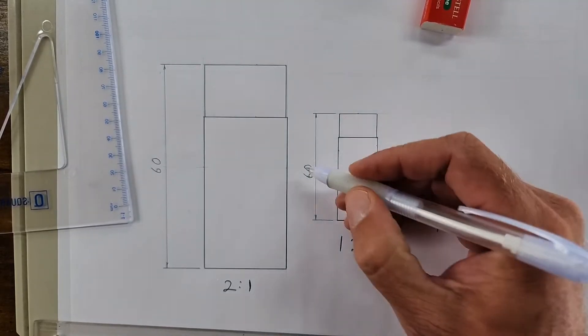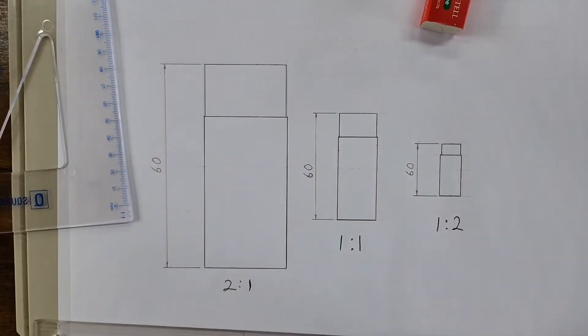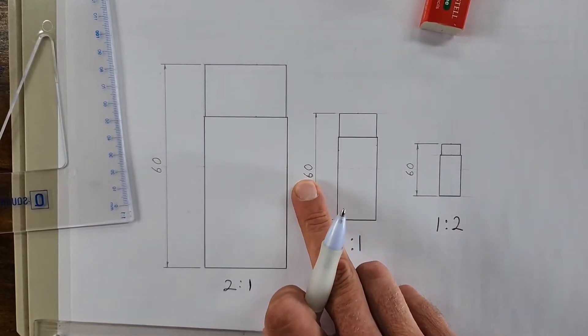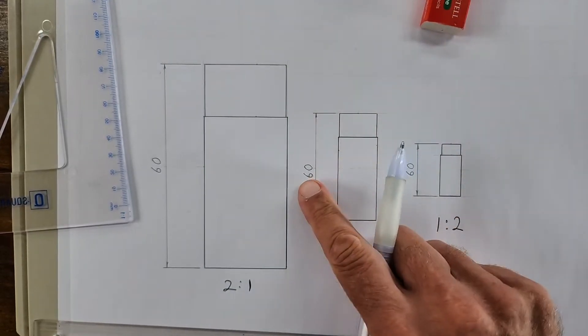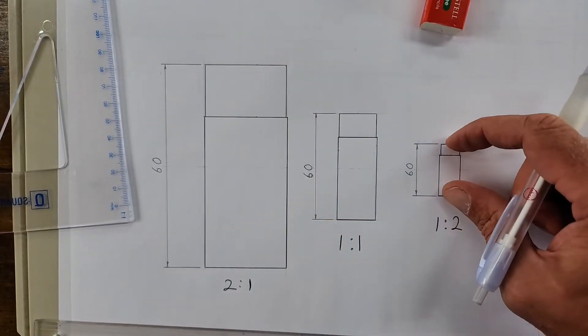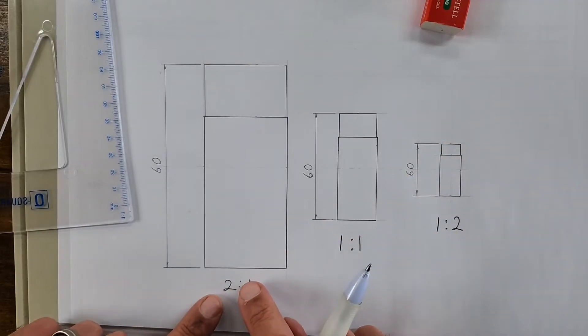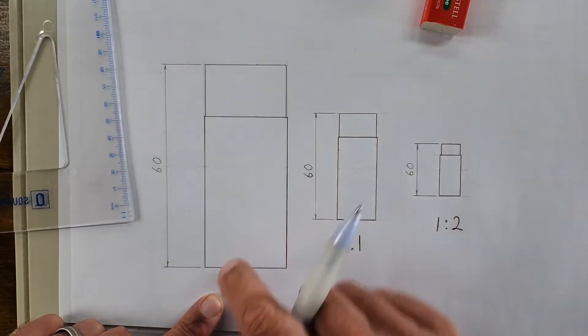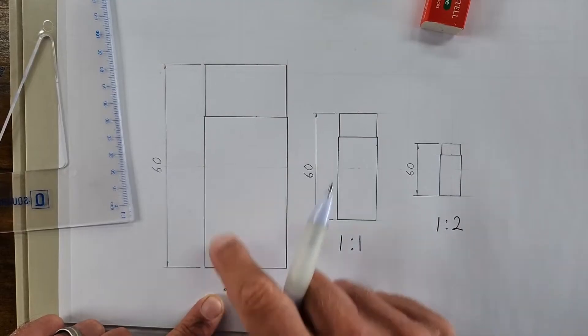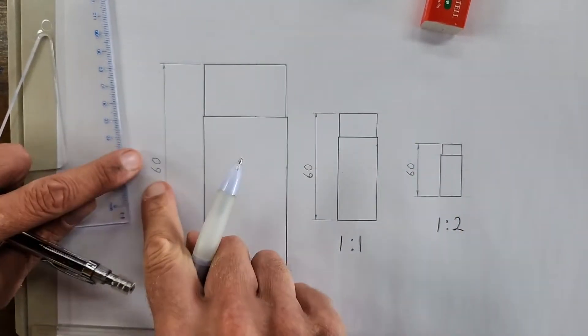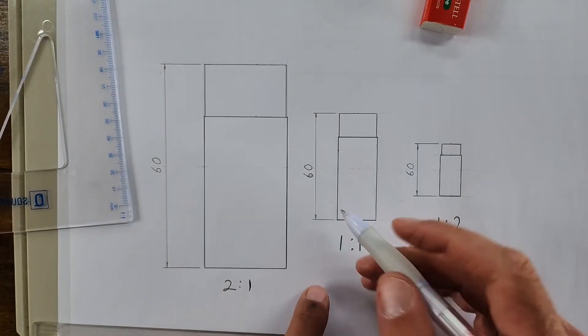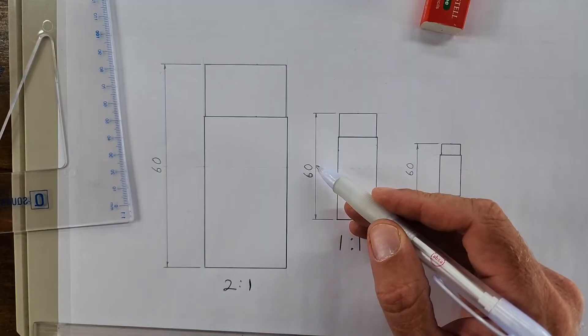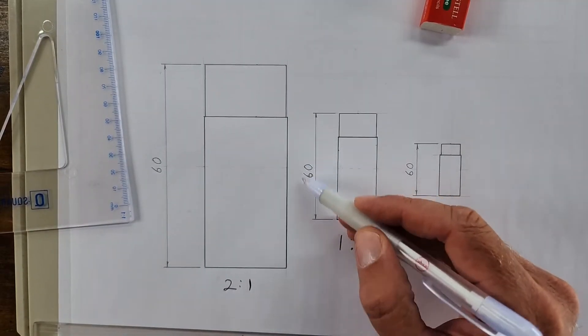If it's twice the size, I'm going to take that measurement and I times it this time with 2, and that gives me my new measurement, not the dimension, just the measurement. If it's scale 5 to 1, what do I times this with now? Make sense?